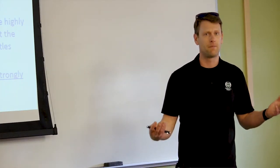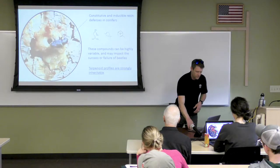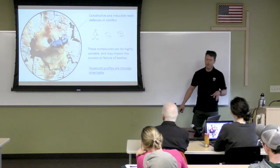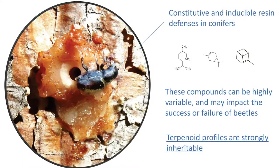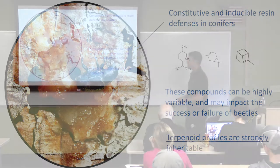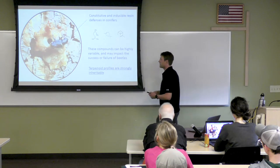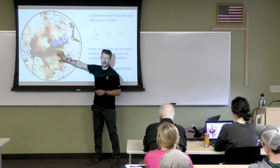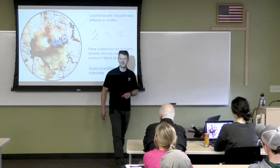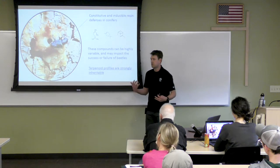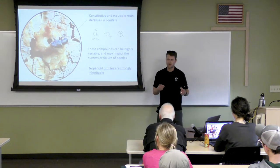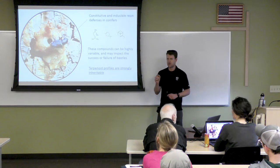If all goes well for the tree, what the situation looks like is the beetle gets encased by resin and crystallized, unable to successfully complete egg-laying. These terpenoid compounds are also fairly antibiotic, so they can kill fungi or pathogens introduced into the tree vascular tissue at that point.